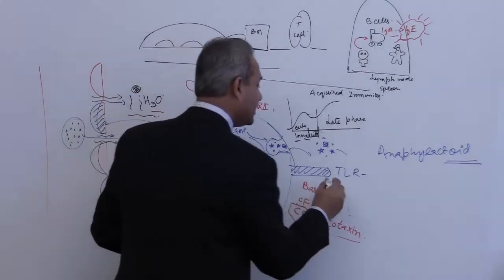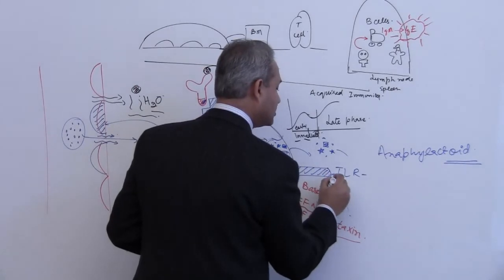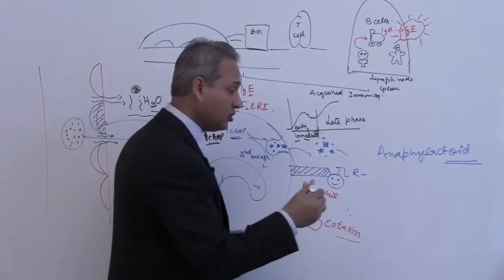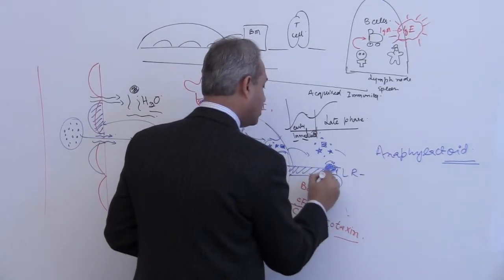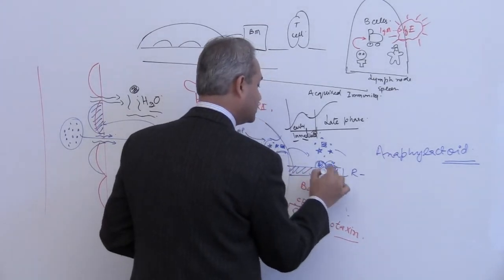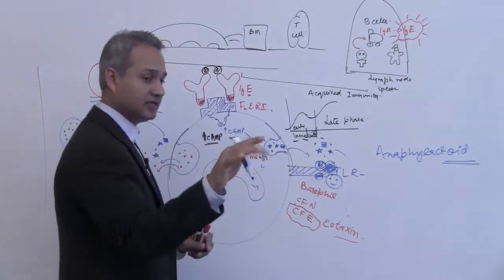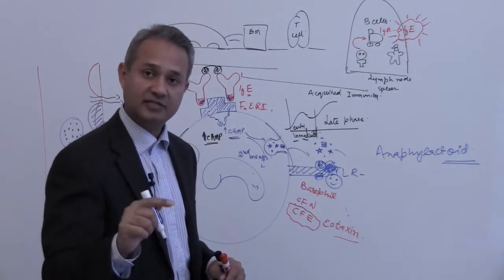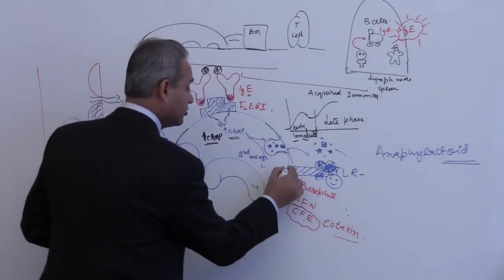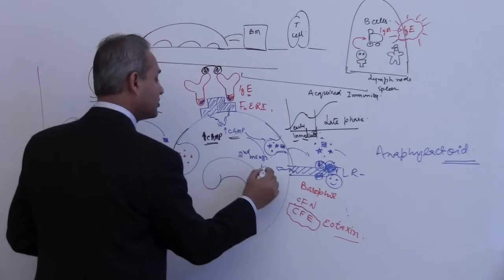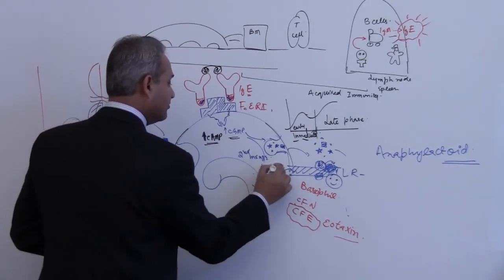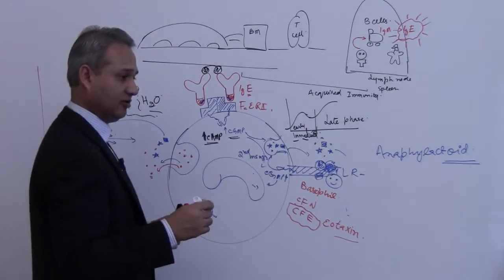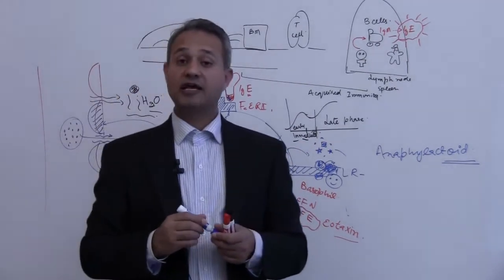They can independently check the pathogen which could be a bacteria or they could check something like a pollen or some other allergen. These can see the surface, recognize the surface, and as a result there could be conformational change. Once again causing the same thing: cyclic GMP increases, which causes the various proteins to start doing the degranulation. This is called anaphylactoid reaction.